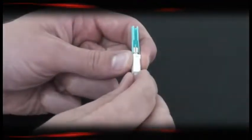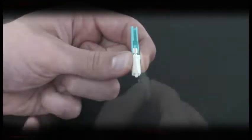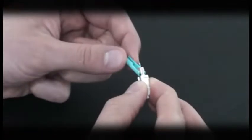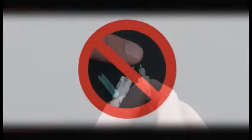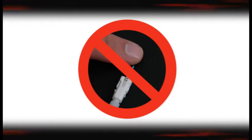First, remove the factory installed dust cap. Next, while holding the connector firmly, pull straight down on the cleave protector to remove it from the connector. When doing this, be careful not to touch the cleaved fiber stub with the protector or your fingers, as this may damage the cleaved end of the fiber.